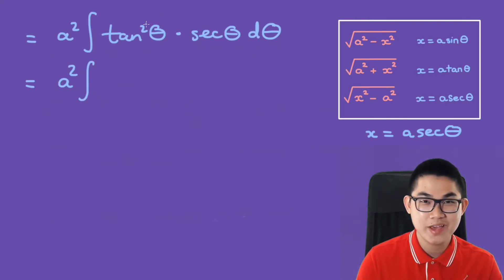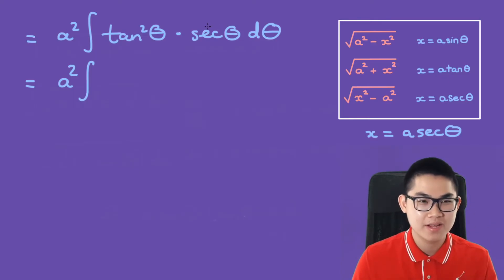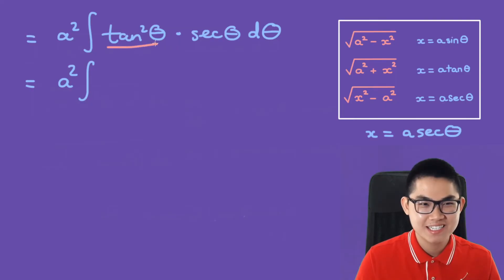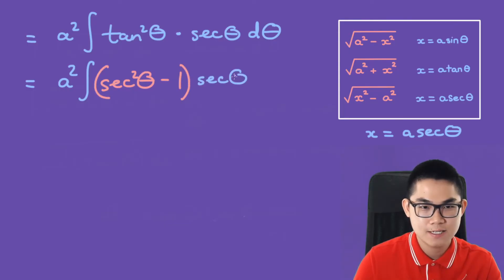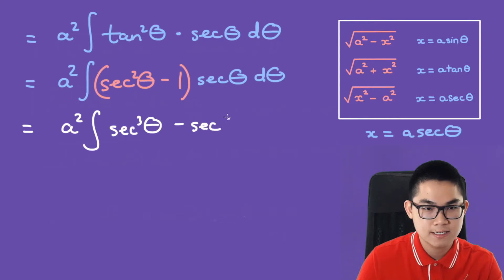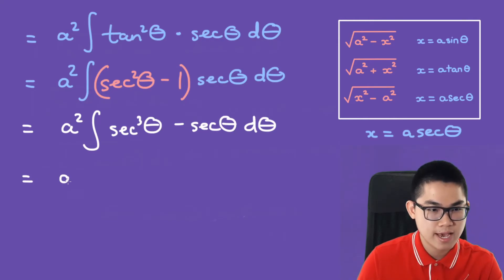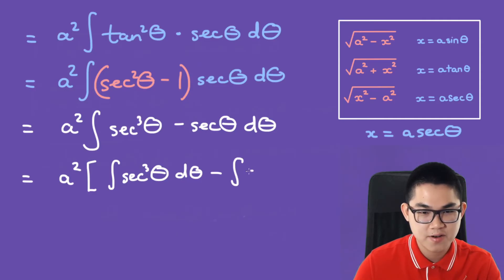The best thing to do here is to convert tan into secant so we only have one trig function to worry about. Tan squared is secant squared minus 1, so we get a squared times secant squared minus 1 times secant d theta, which gives a squared times secant cubed minus secant d theta. We can split this apart into the integral of secant cubed minus the integral of secant.